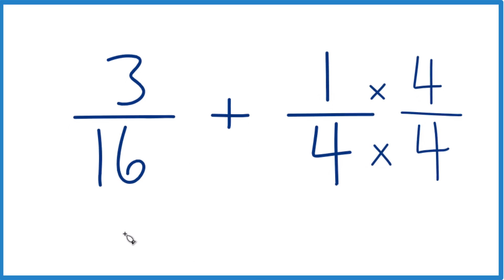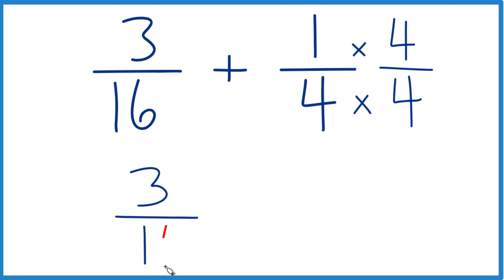So now what we end up with is we have our 3/16 and we have 1 times 4 is 4, 4 times 4 is 16. Now these denominators are the same and it's pretty easy.